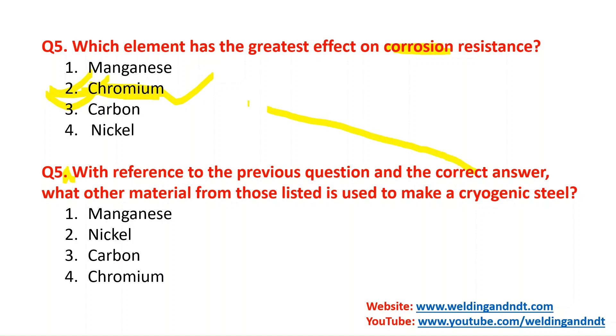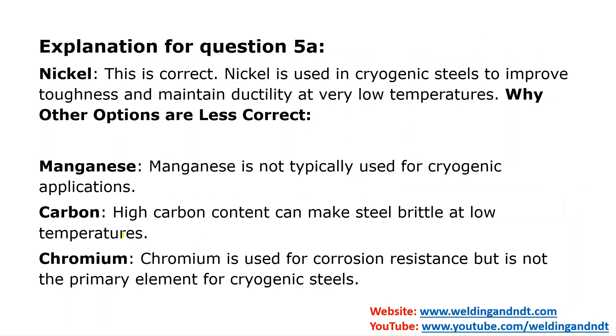Question 5A: with the correct answer being chromium, what other material from those listed — magnesium, nickel, or carbon — is used to make cryogenic steel? Nickel is the correct answer; it is most suitable for making cryogenic steel. With that we have reached the end of today's video. I hope you liked it, and I request you to please join my channel and support my initiative. Thank you very much.